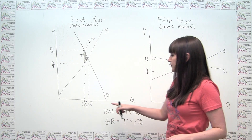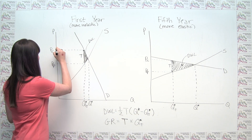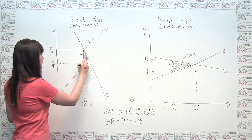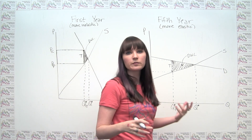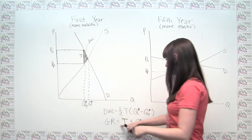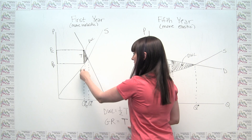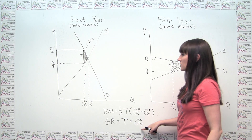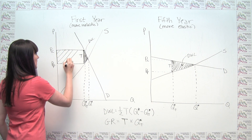We can think about what that looks like on our diagram. It's represented by a rectangle — things that have two factors multiplied together are represented by rectangles, since area of a rectangle is length times width. One dimension of the rectangle is the amount of the tax, and the other dimension is the quantity transacted once the tax is in place, Q* sub T. So the area of this rectangle is our government revenue.